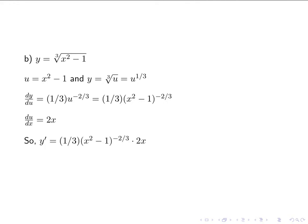And then y prime is the product of those two: 1 third times (x squared minus 1) to the negative 2 thirds, from dy/du, times 2x from du/dx. We get 2 thirds x times (x squared minus 1) to the negative 2 thirds. You can't distribute that because of the exponent there.